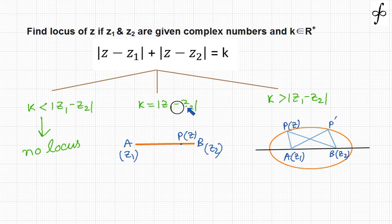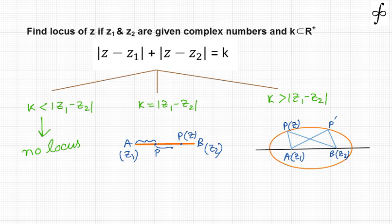If k is equal to |z1 - z2|, then the locus of P will be any point lying in between A and B. For any point lying in between A and B, as P changes location along the segment, the sum PA + PB is every time going to be equal to |z1 - z2|, which is the distance between z1 and z2.